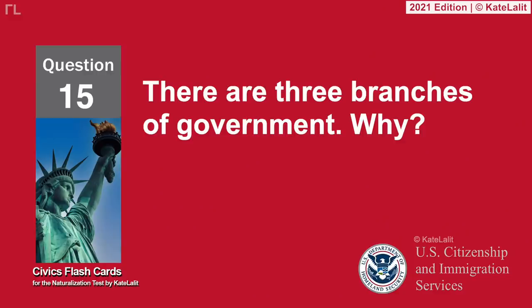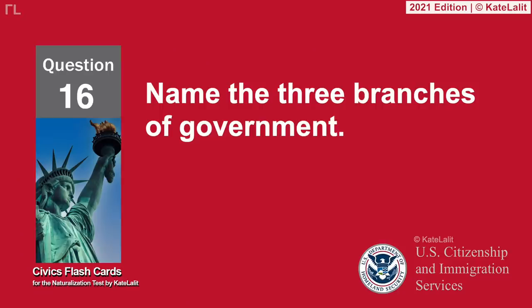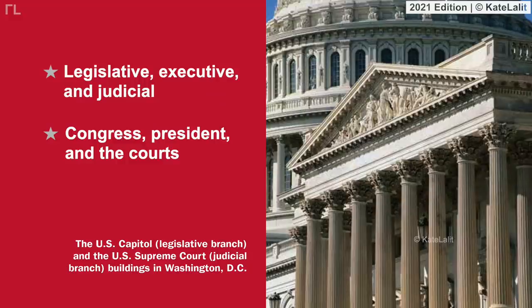There are three branches of government so one part does not become too powerful — checks and balances, separation of powers. Name the three branches of government: Legislative, Executive, and Judicial — or Congress, President, and the courts.